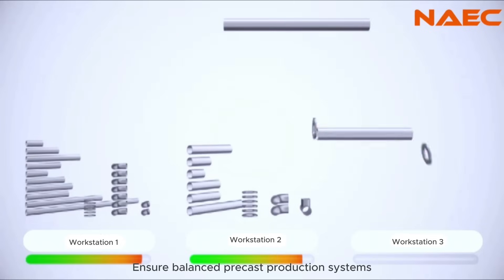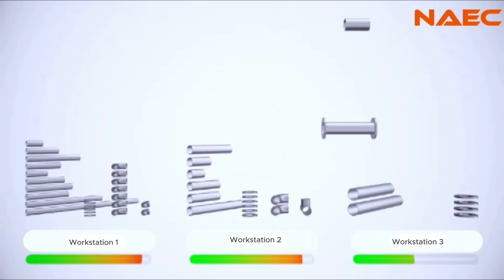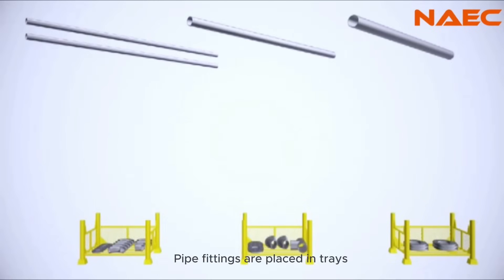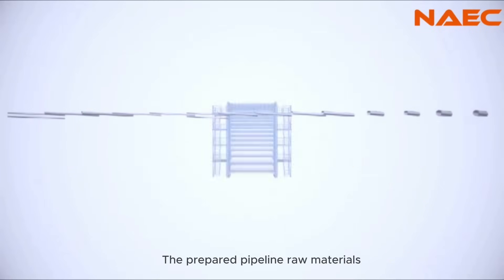Precast production systems prepare raw materials from the warehouse. Pipe fittings are placed in trays. The prepared pipeline raw materials deliver to the designated production line cutting station.